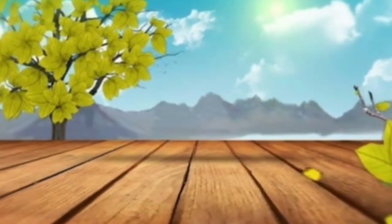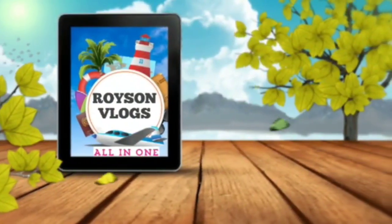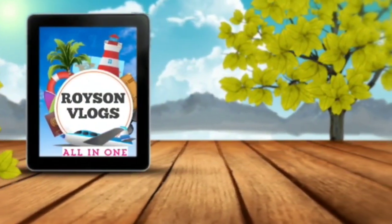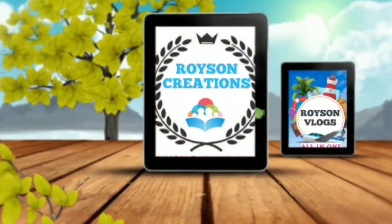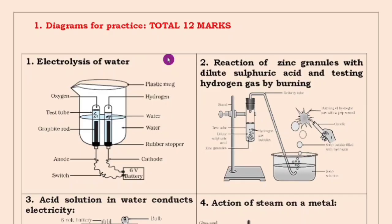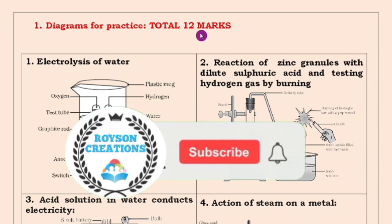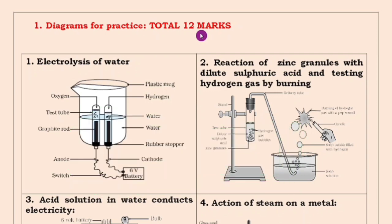Hello dear students, welcome to Royce and Creations YouTube channel. In this video I am going to show which are the diagrams that will come to the exam, because many students are asking for the diagrams. Diagrams carry 12 marks — it is very important because it is easy to score. If you learn all the diagrams with labels, it is very easy to score the marks. So you have to practice the diagram along with the labeling.